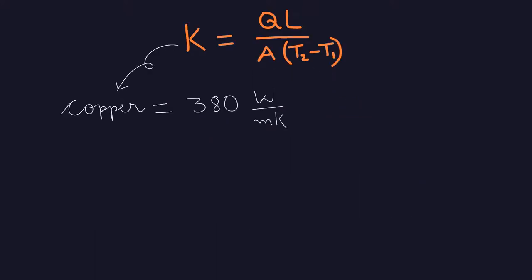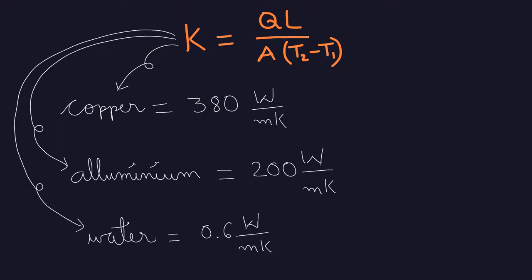Thermal conductivity of copper is around 380 and aluminum is around 200, whereas for water it is 0.6 and wood is 0.1.